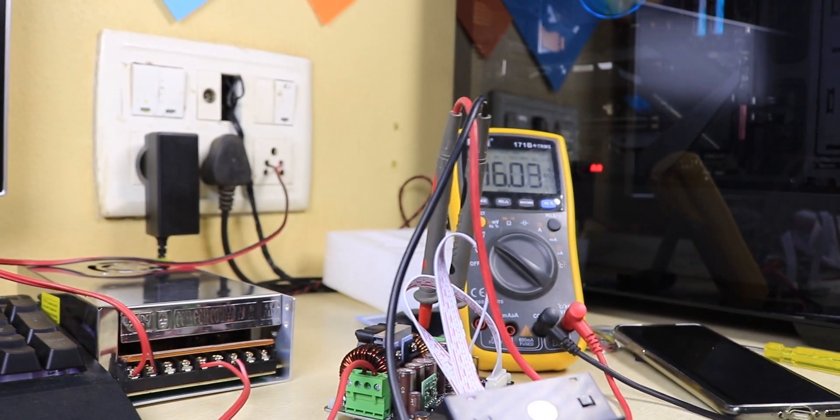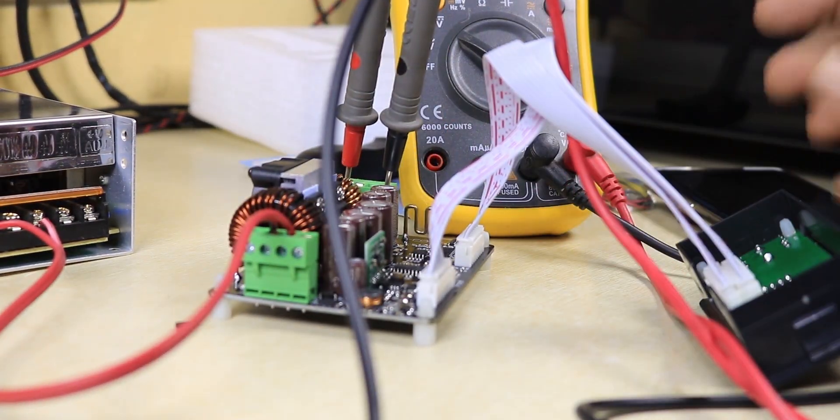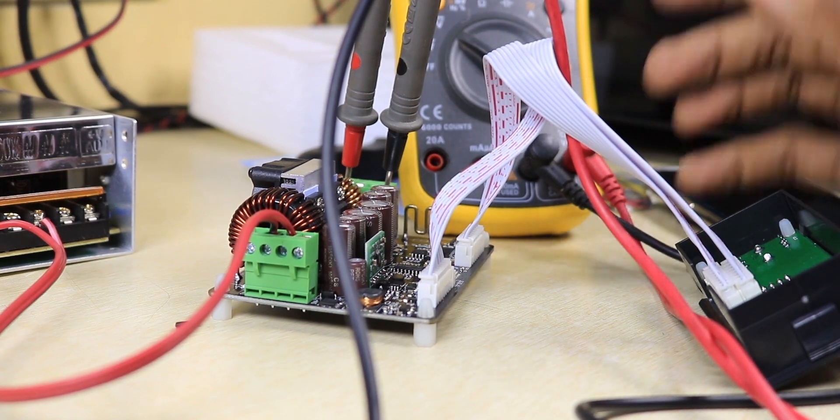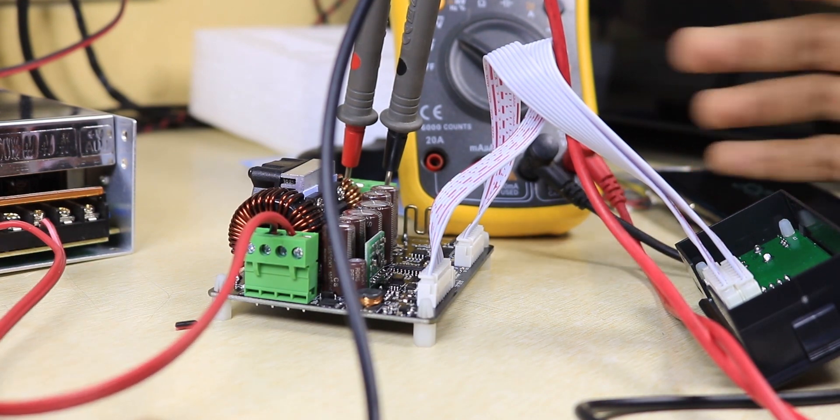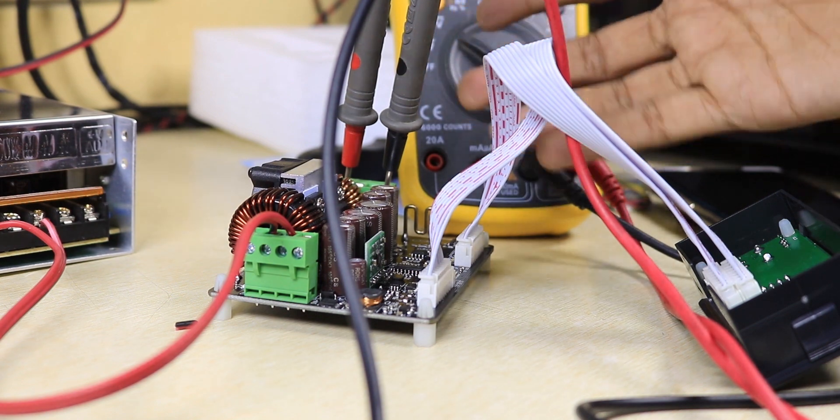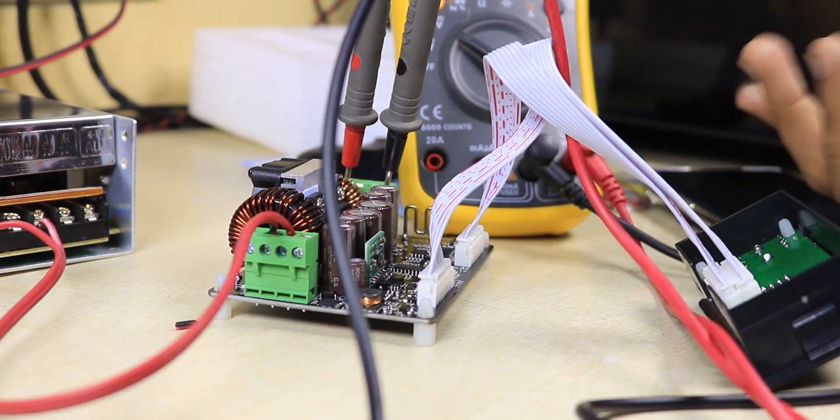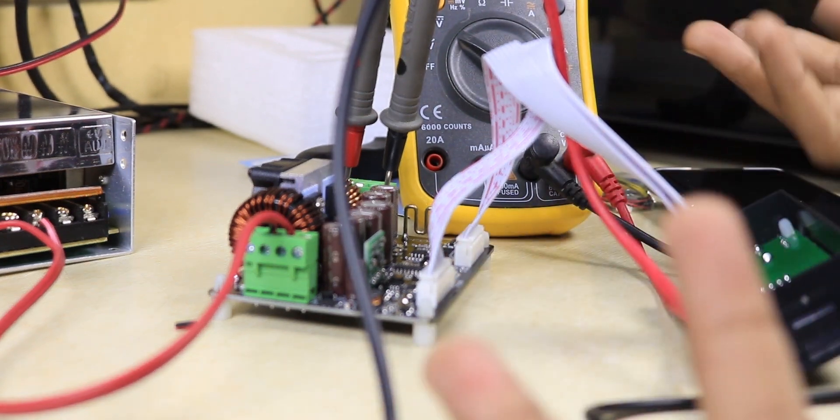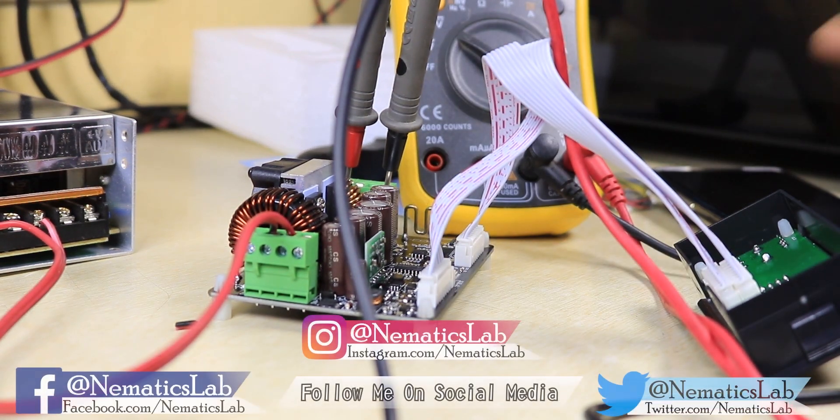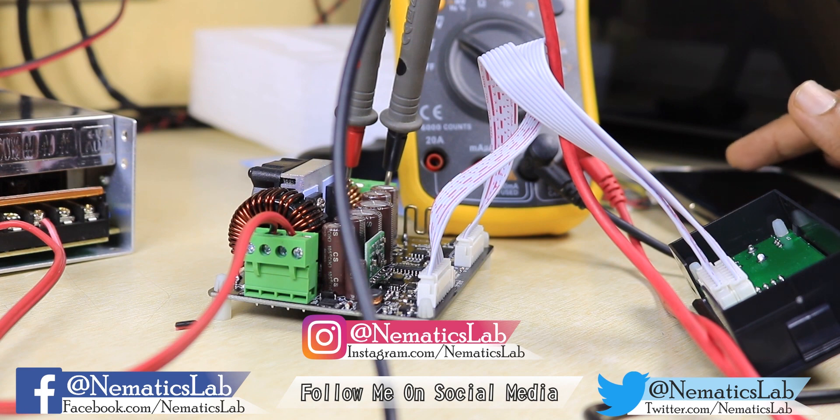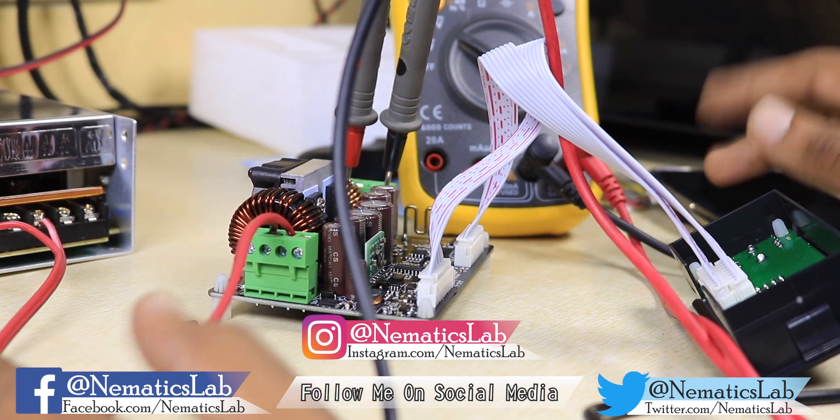I was initially planning to make a dedicated video on how to make a power supply using this module, but as you saw, this is really simple to use and already pretty much a power supply. You just need to make a case and attach an SMPS. That's why I made this review video instead. If you want me to make a video on building a power supply or what project I should use this 50V 5A buck-boost converter for, let me know in the comments. I hope you enjoyed this one. If you did, give it a thumbs up, or thumbs down if you didn't like it. I'll see you guys in the next one.